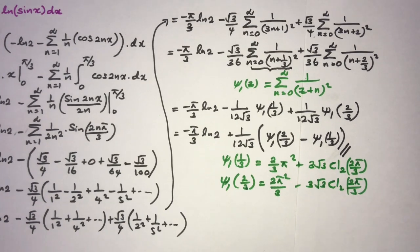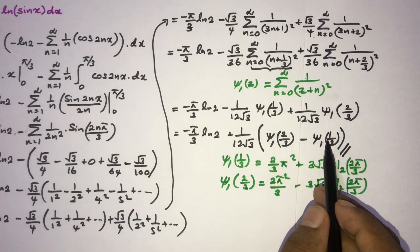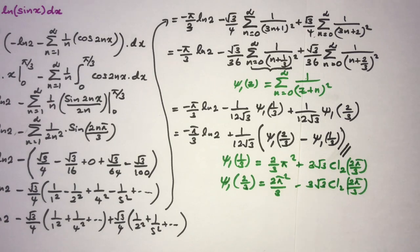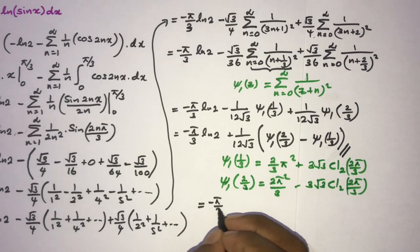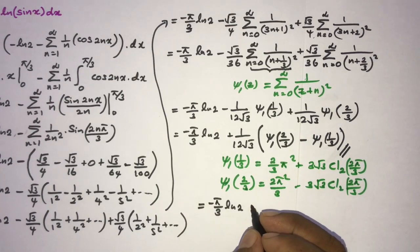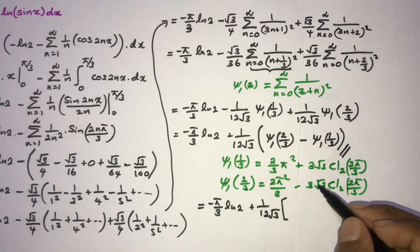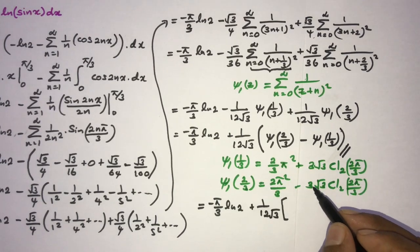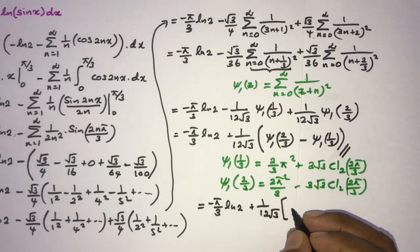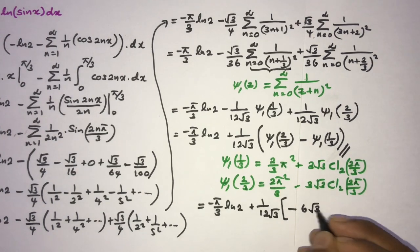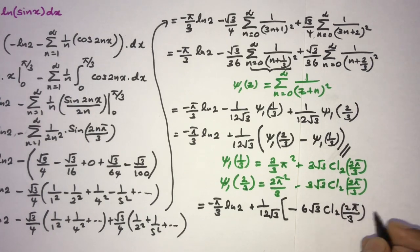Also ψ₁(2/3) = 2π²/3 - 3√3 · Cl₂(2π/3). Computing ψ₁(2/3) - ψ₁(1/3): the 2π²/3 terms cancel, leaving -6√3 · Cl₂(2π/3).